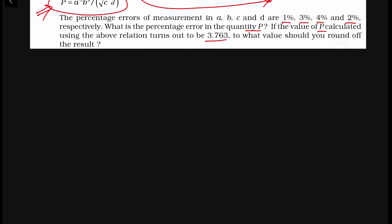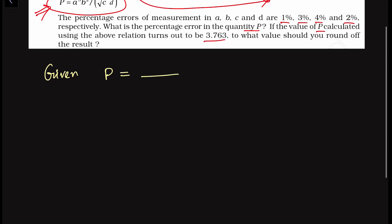First of all, what we are given: P is equal to A cubed times B squared divided by the square root of C times D. This is the relation between the observables A, B, C, D and the quantity P.